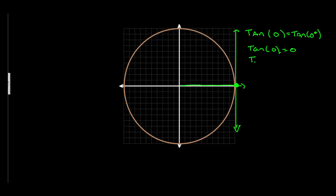Likewise, the tangent at 360 degrees, which is the tangent of 2π, is also equal to 0, or any angle that's coterminal with 0 degrees.